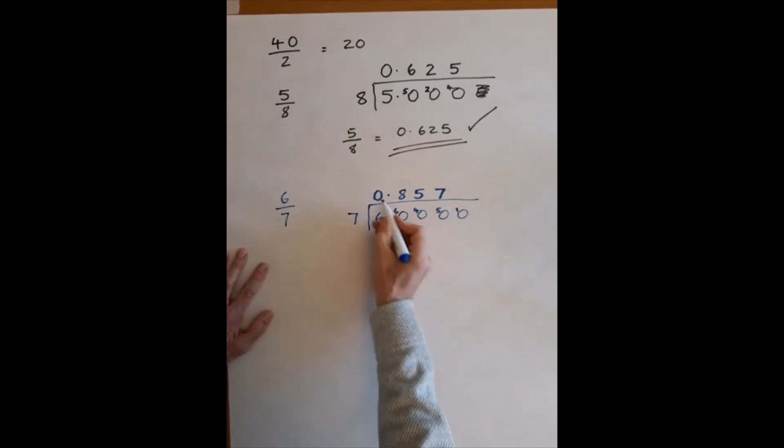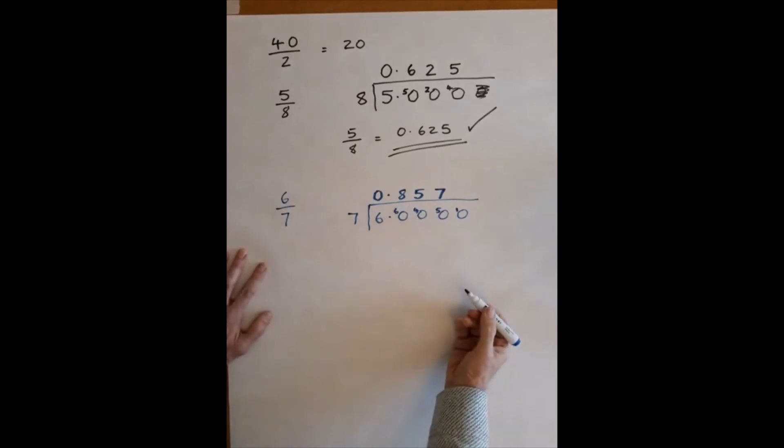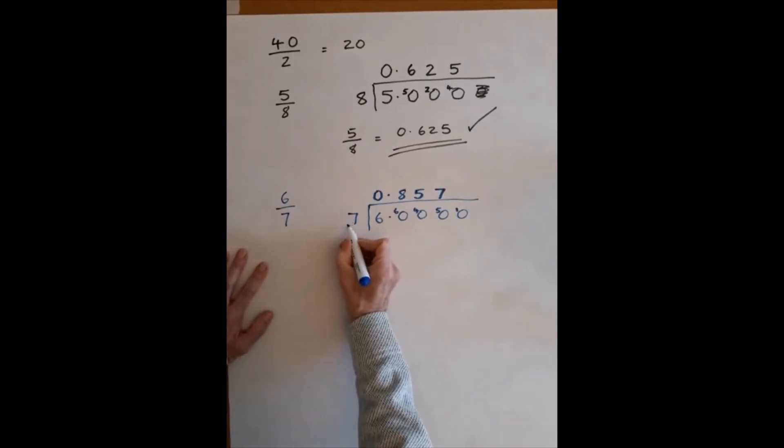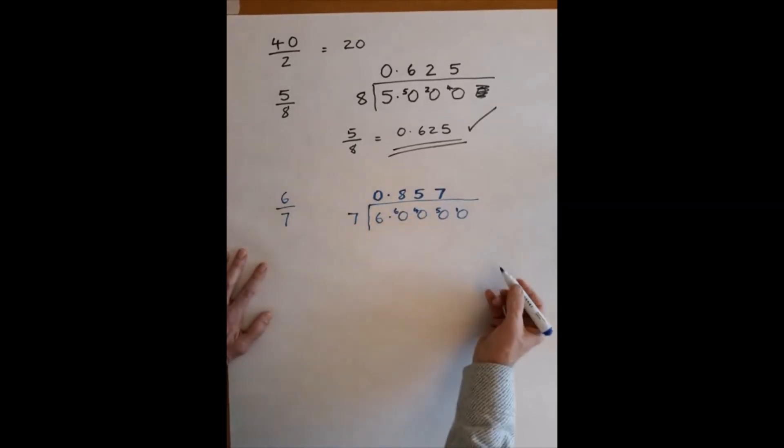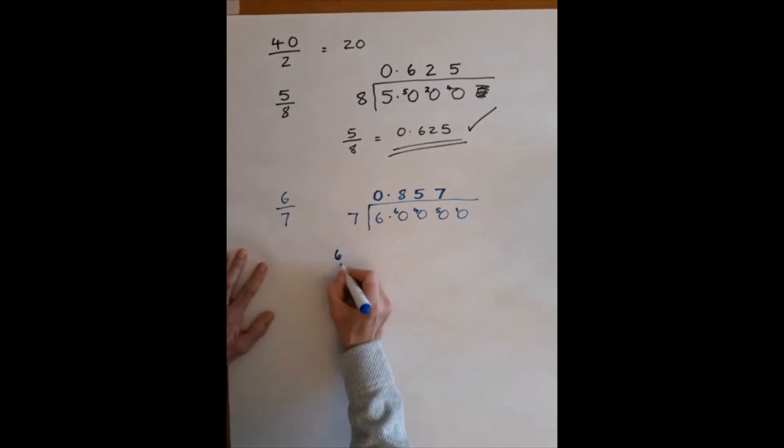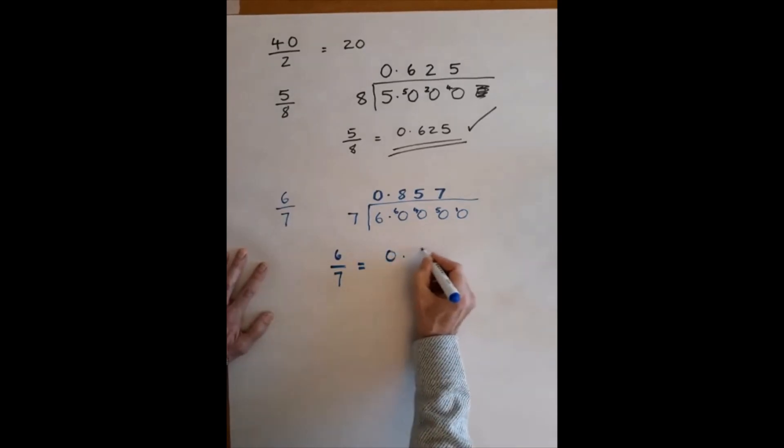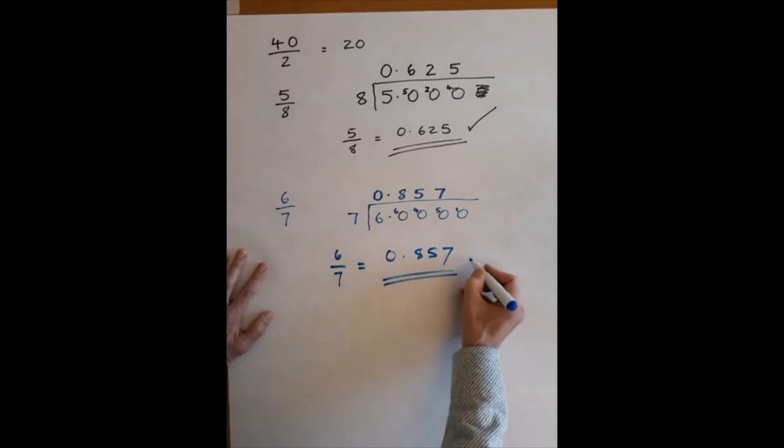And I could carry on doing this, but this is going to be accurate enough for anything that we do. So 6/7 is the same as 0.857. Okay, so at that point, choose any appropriate method that you think will work for you and work your way through the questions on the handout.